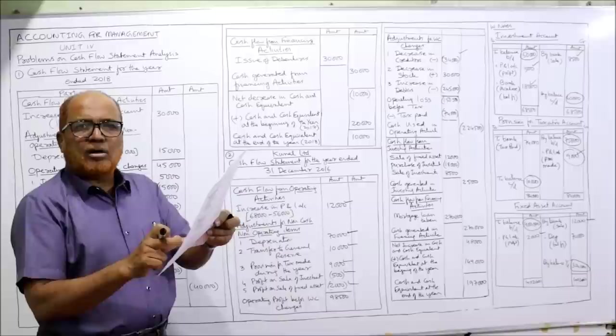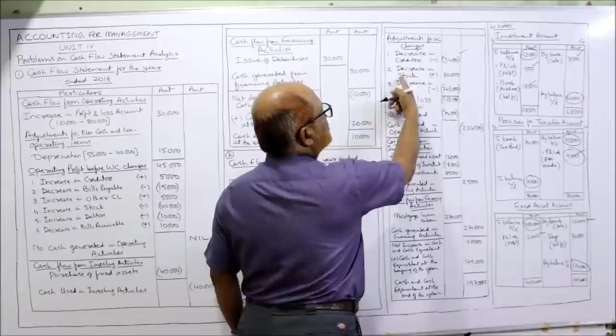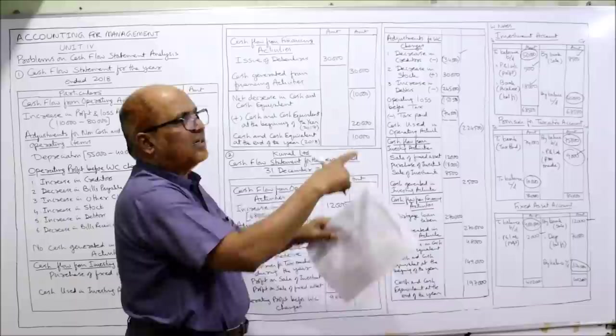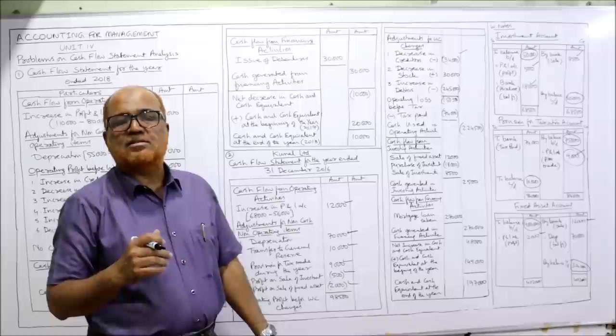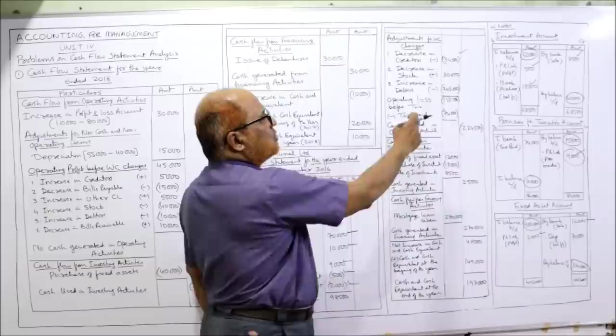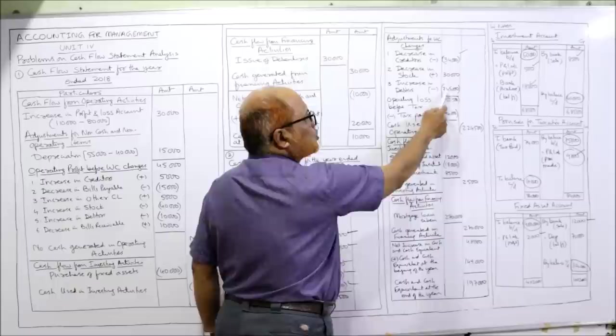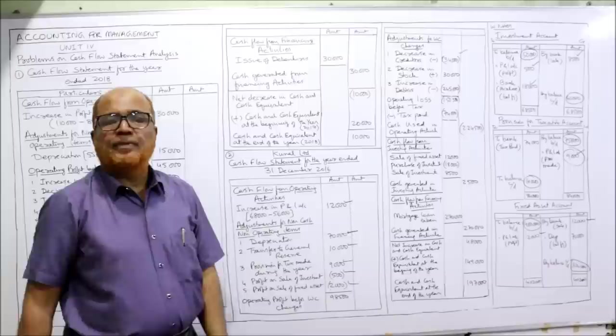Debtors: increase in current asset should be subtracted. Increase in debtors: minus 2,45,000. Total: 98,500 minus 34,000 plus 30,000 minus 2,45,000 — you get operating loss before tax of 1,50,500. This is an operating loss because it is negative. Less: income tax paid — already calculated as 74,000. Deduct 74,000. Cash used in operating activity: 2,24,500 — negative.